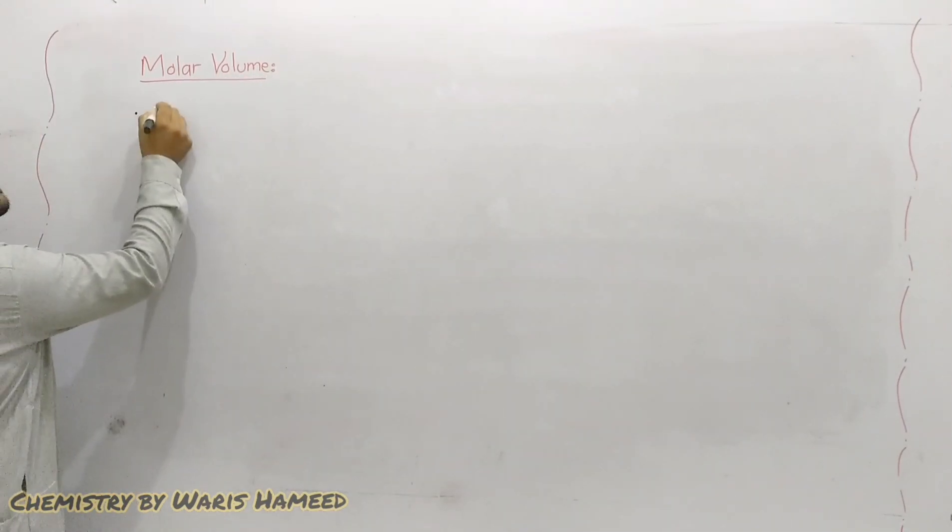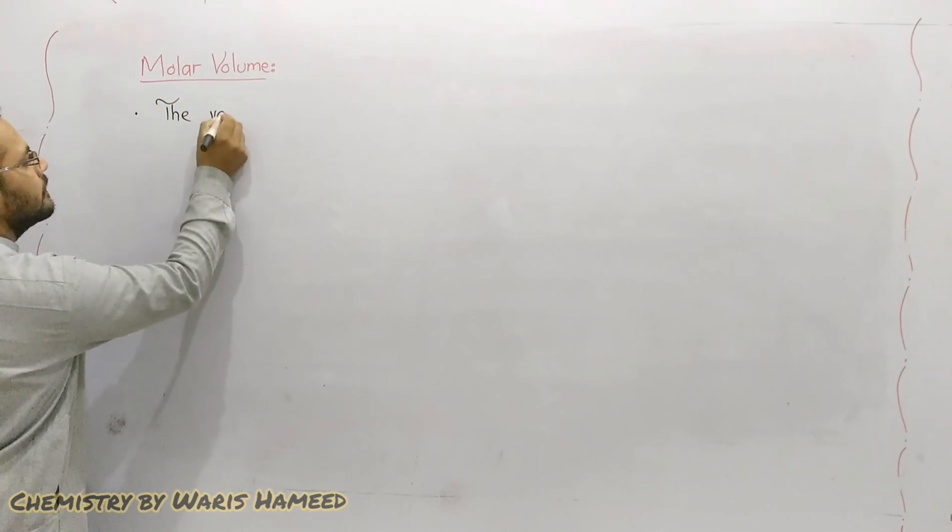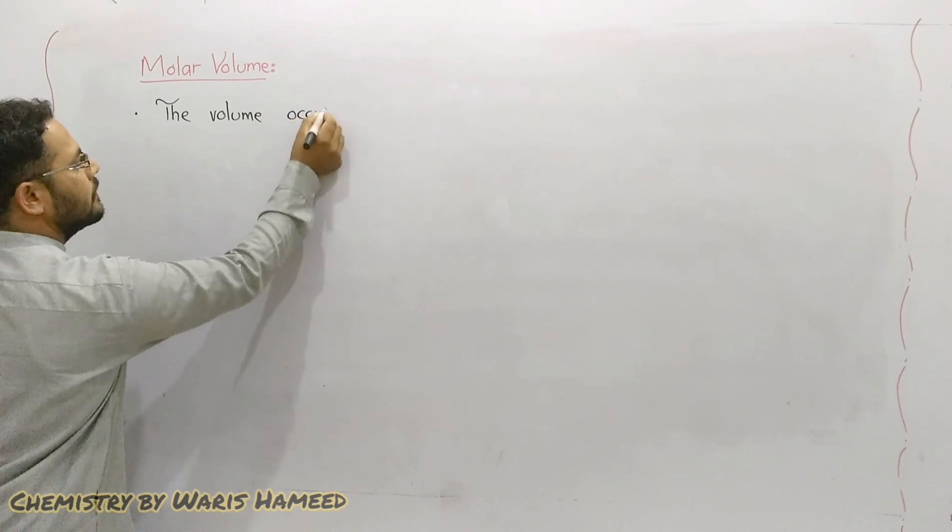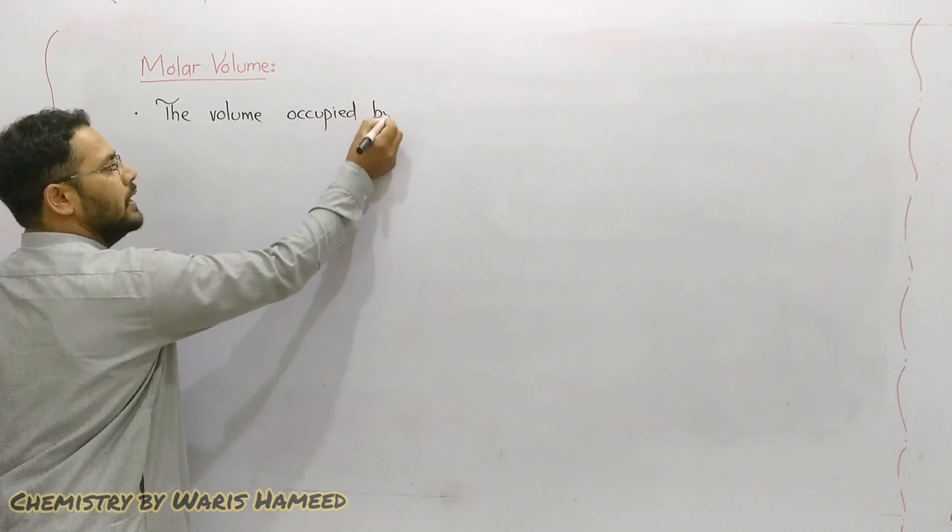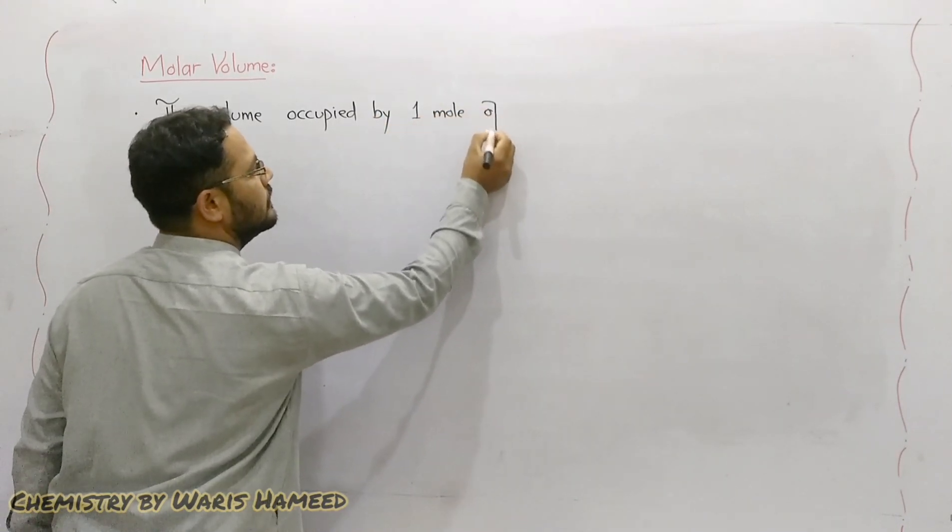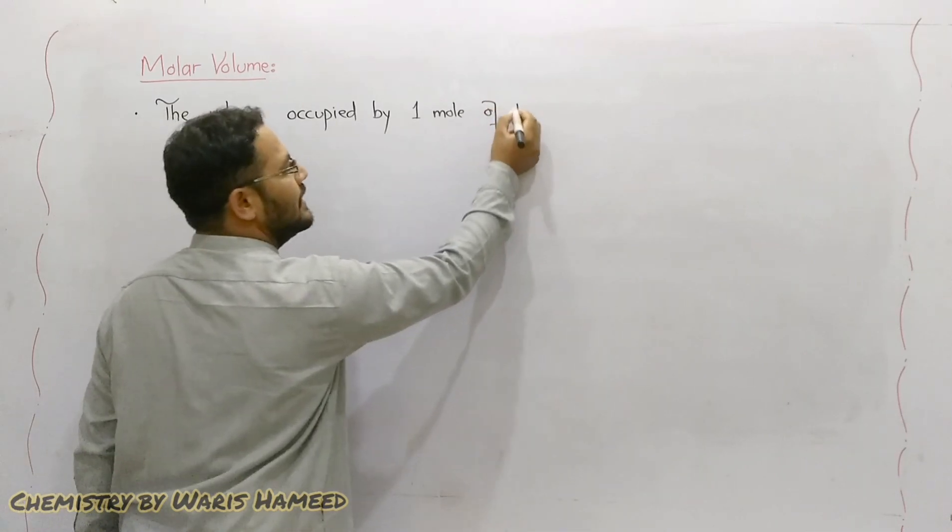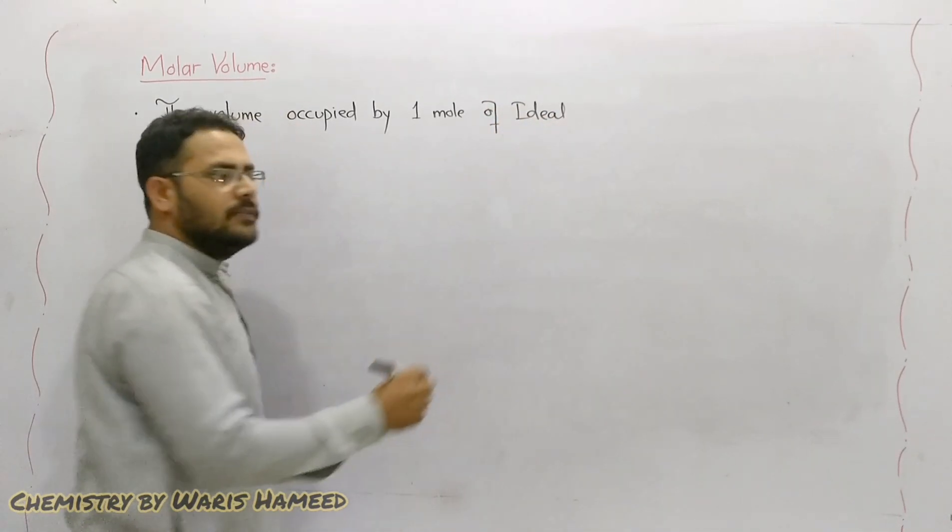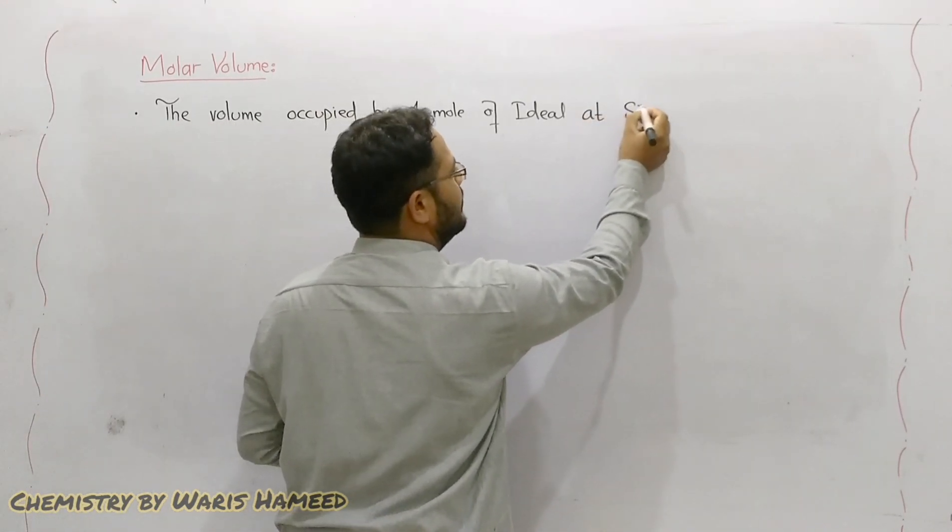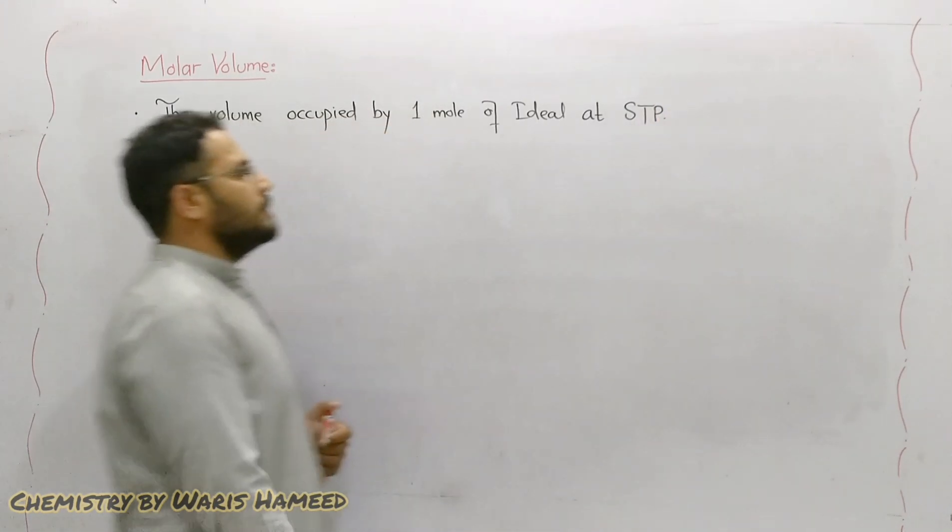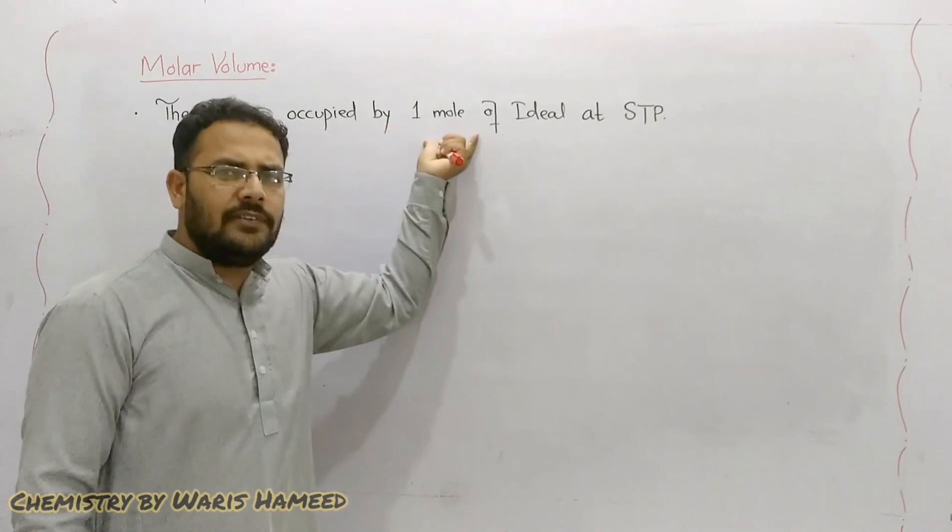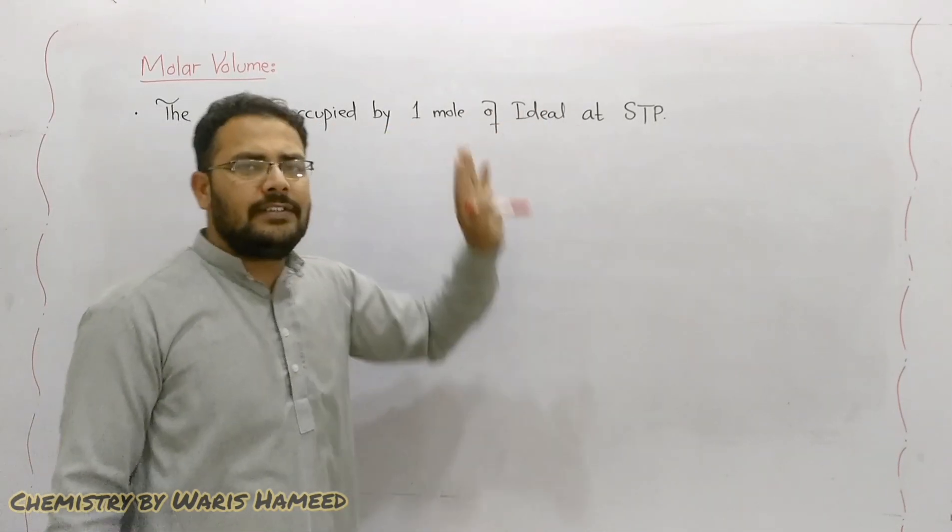Molar volume is the volume occupied by one mole of ideal gas. It is the volume which is occupied by one mole of ideal gas at standard temperature and pressure.